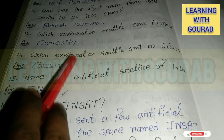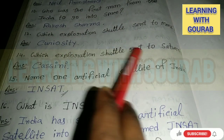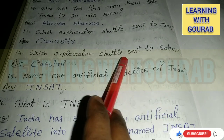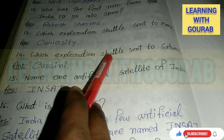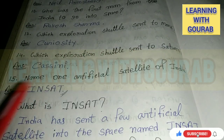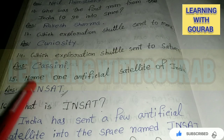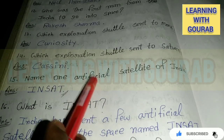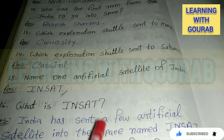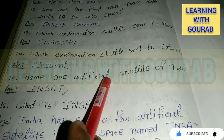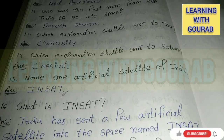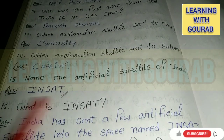Which exploration shuttle was sent to Saturn? Answer: Cassini. Name one artificial satellite of India. Answer: INSAT.